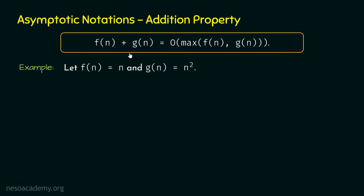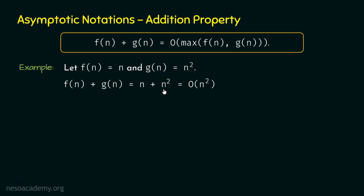According to this property, f(n) plus g(n) must be big O of maximum of f(n), g(n). Let's first add these two functions, that is n and n square. We get n plus n square, and n plus n square is big O of n square, because n square is the dominating term in this expression. The growth rate is always decided by the dominating term.